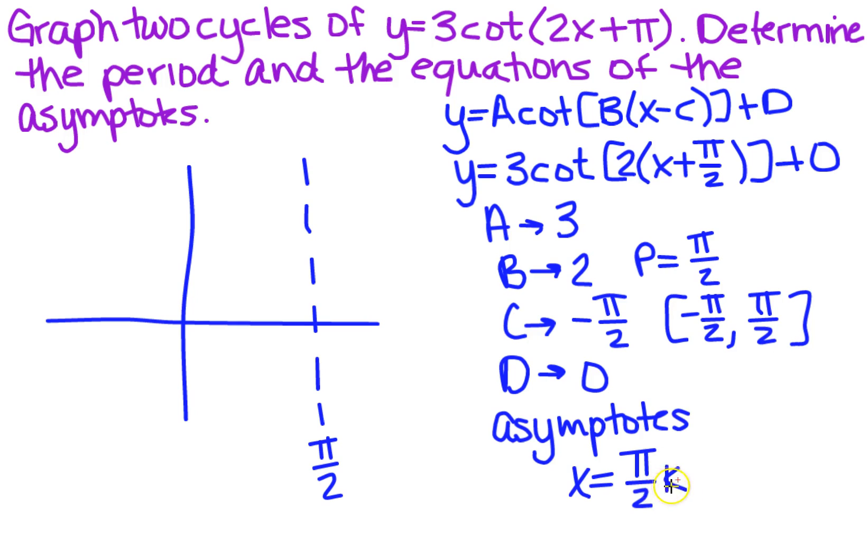Because pi over 2 times 1 is pi over 2, and if I do times a negative 1, it's going to be on the other side, so it's going to be negative pi over 2, which agrees with what we have up here that we got when we talked about the period and we talked about c.